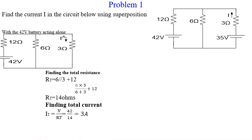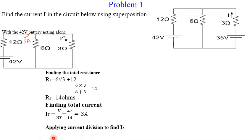Now knowing the total current of 3 amps entering the parallel combination, I use current division to calculate IA — the current through the 3-ohm branch. The opposite resistor is 6 ohms, so IA equals 6 over (6 plus 3) times 3 amps, which gives us 2 amps. So the current IA through the 3-ohm resistor when the 42-volt source acts alone is 2 amps.